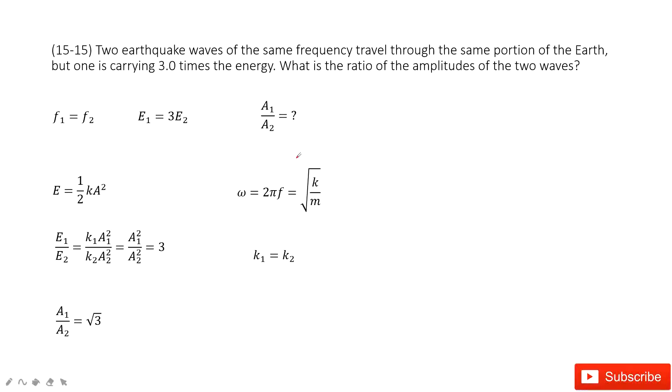In this question we have two earthquake waves, same frequency, but the energy ratio is 3.0. Now we need to find the ratio for amplitude, A1 over A2.